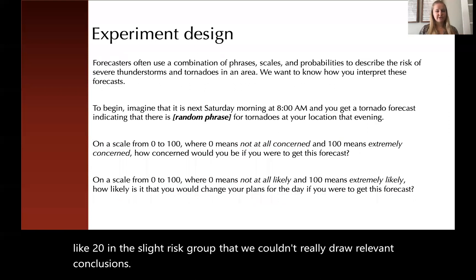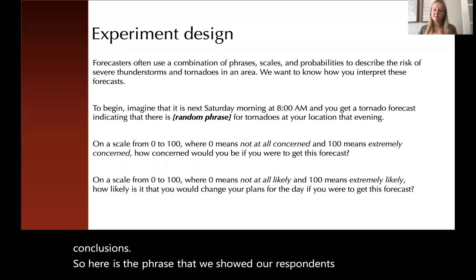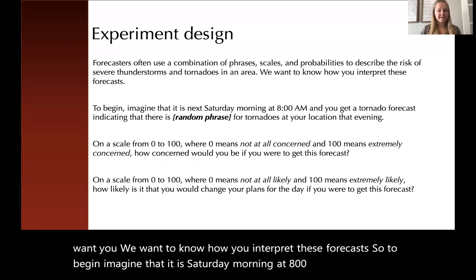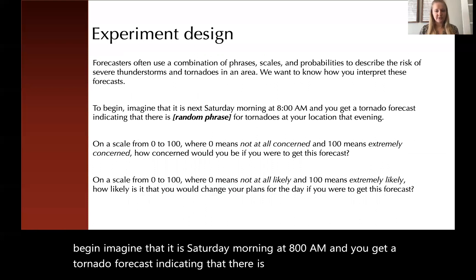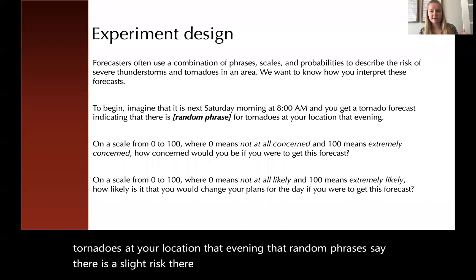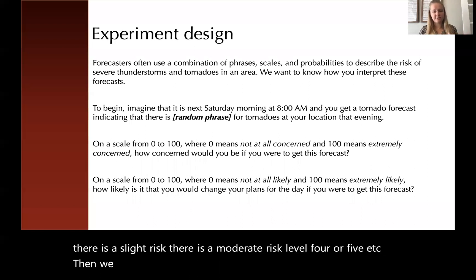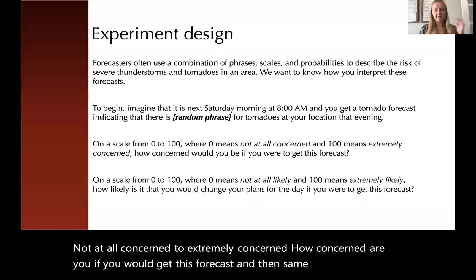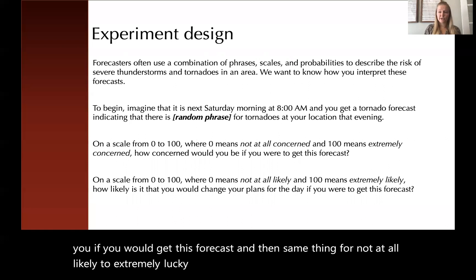Here's the phrase we showed our respondents: 'Forecasters often use a combination of phrases, scales, and probabilities. We want to know how you interpret these forecasts. Imagine that it is Saturday morning at 8 a.m., and you get a tornado forecast indicating that there is a [random phrase] for tornadoes at your location that evening.' That random phrase is, for example, 'there is a slight risk' or 'there is a moderate risk, level 4 of 5.' Then we ask, on a scale from 0 to 100, not at all concerned to extremely concerned, how concerned are you? And similarly, not at all likely to extremely likely, how likely are you to change your plans?